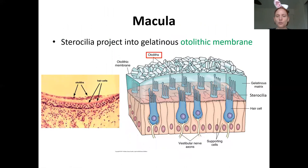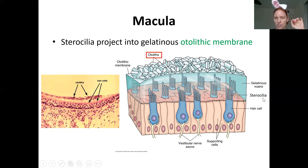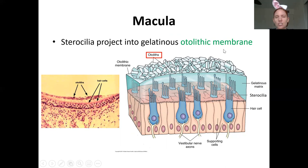Looking at the macula: the epithelium contains the receptor cells — the hair cells — with stereocilia sticking up from the top. For the macula, those stereocilia are embedded in a jelly-like membrane called the otolithic membrane. The reason it's called the otolithic membrane is because it has little calcium carbonate crystals — like sand — embedded on its surface.